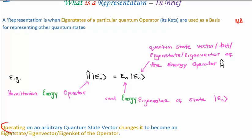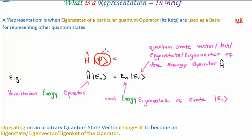Now, if you operate on an arbitrary quantum state vector, the state vector changes and it becomes an eigenvector, or an eigenstate, or an eigenket of the operator. Broadly speaking, let's say instead of having an eigenstate of the Hamiltonian, we had a generic quantum state vector, and we operated on it with the energy operator. What we'd get back is this ket would change — it would collapse — and it would become one of the energy eigenstates. So this is the collapsing of the wave function, and we'll speak more about that in the future.